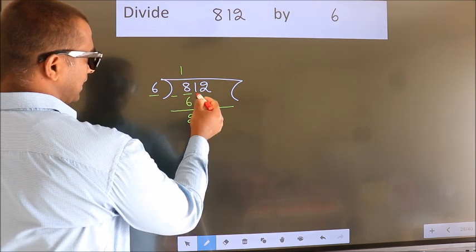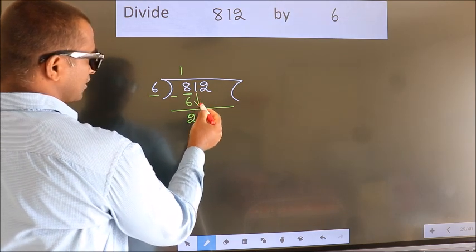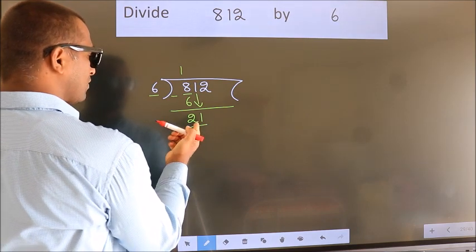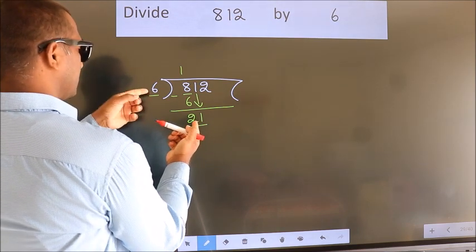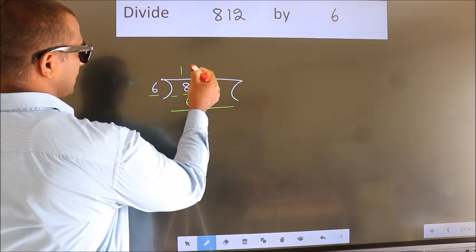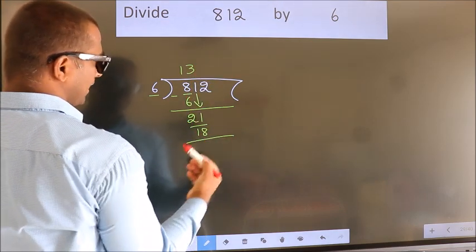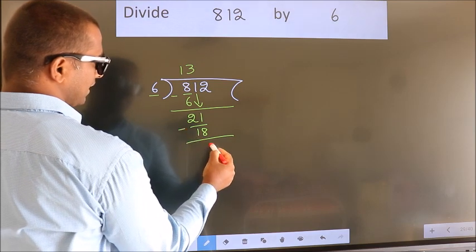After this, bring down the beside number. So, 1 down. So, 21. A number close to 21 in 6 table is 6 3s 18. Now, we subtract. We get 3.